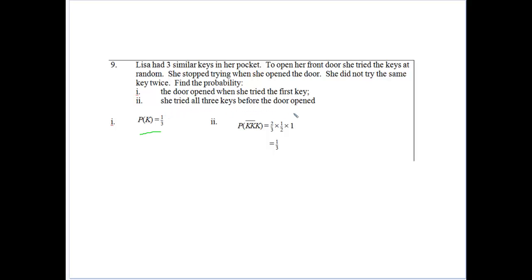What's the probability that she tried all three keys before the door opened? Well, that would mean probably she doesn't get it with the first, doesn't work with the first one, doesn't work with the second, but gets the third. So probably she doesn't get it with the first one, well, complementary would be two thirds. She's tried the first key, she's only got two keys to try. And she tries one of them.